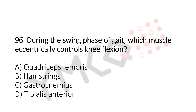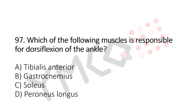During the swing phase of the gait, which muscle eccentrically controls knee flexion? Option A: quadriceps. Option B: hamstrings. Option C: gastrocnemius. Option D: tibialis anterior. And the answer is option B, hamstrings. Now let us move to question number 97.